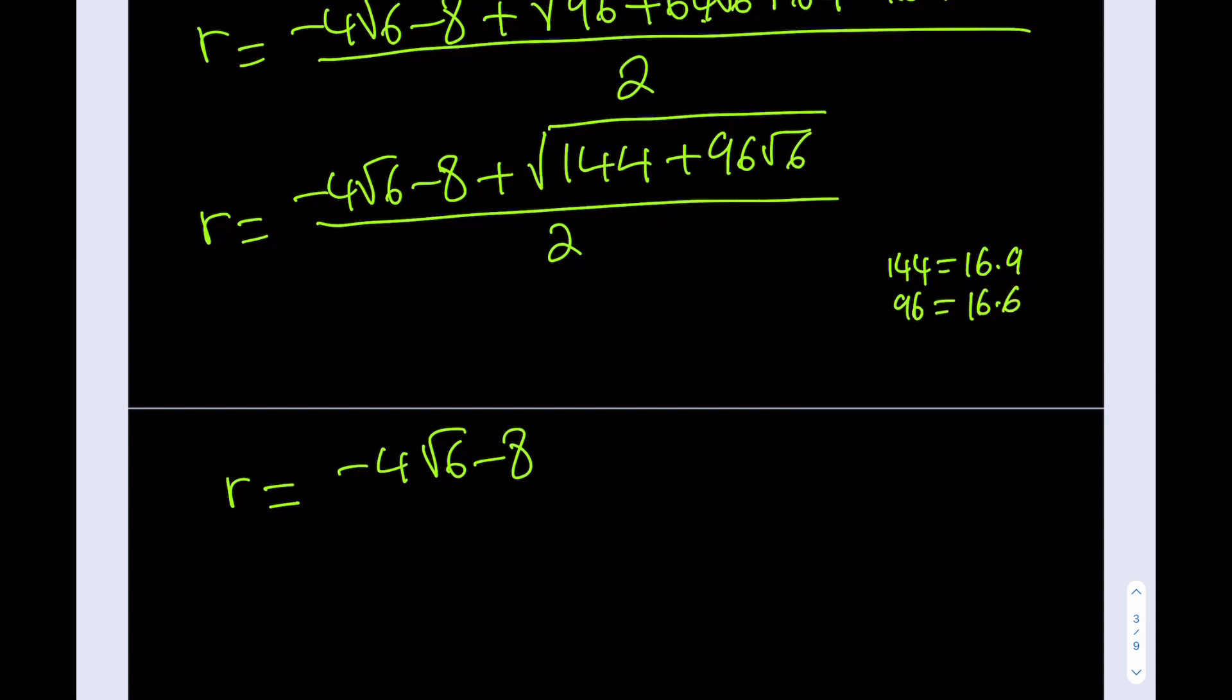I can take out a 16, which is going to be 4 and square root it. And inside the radical, since I divided both of these by 16, I should be getting 9 + 6√6, over 2.